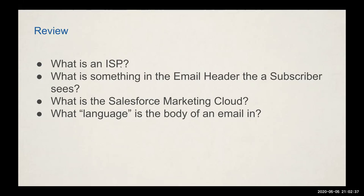In review, the key takeaways from this section are: what is an ISP, what is contained in the email header and what the subscriber sees, what is Salesforce Marketing Cloud as an ESP, and what language the body of an email is written in. Understanding terminology like 'ISP' and why the email header strategy matters — including how different accounts can have different IP addresses and sender profiles — is critical for email marketers.